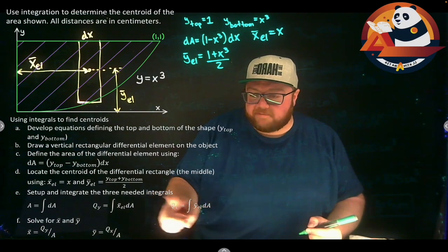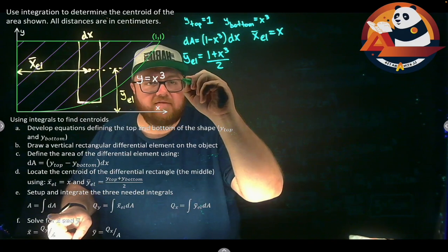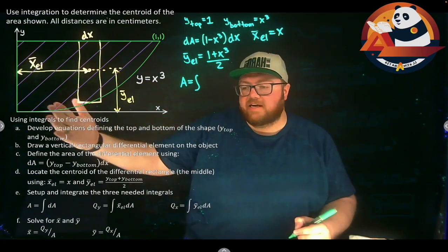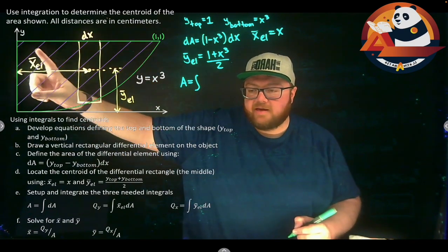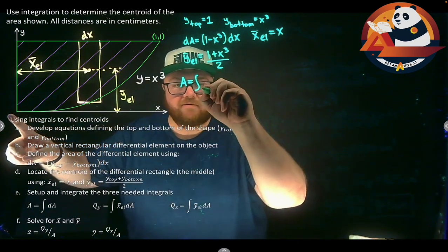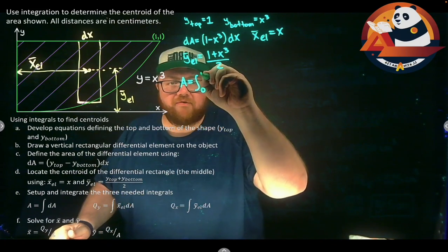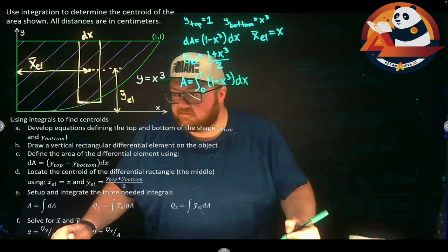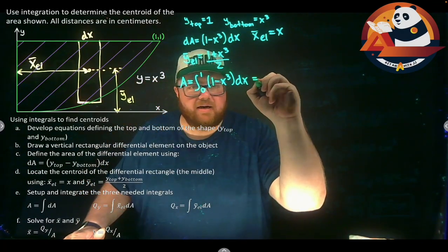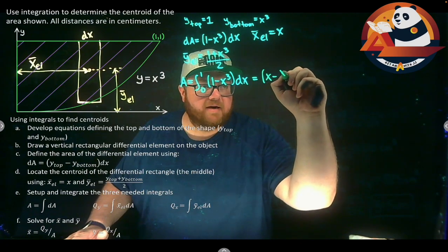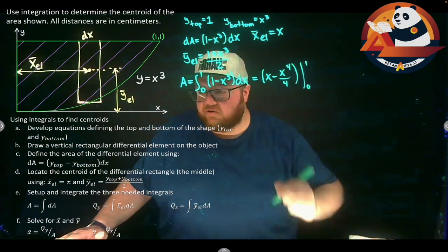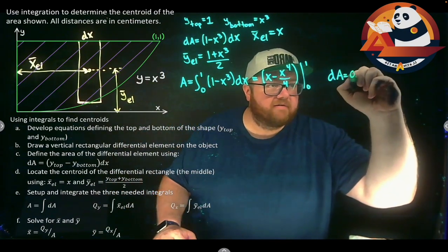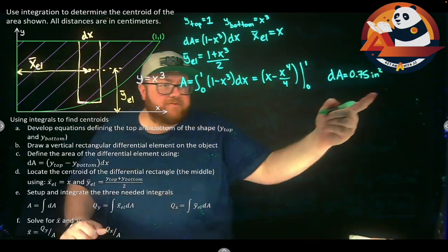Now we set up three integrals. Starting with area: Area equals the integral of dA. Since dA has a dx, we integrate from the smallest x value (0) to the largest (1). Area equals the integral from 0 to 1 of (1 minus x³) dx, which evaluates to x minus x⁴/4 from 0 to 1, giving us Area equals 0.75 square inches.